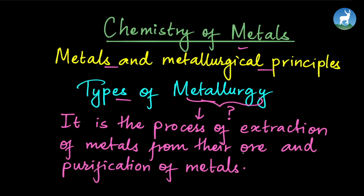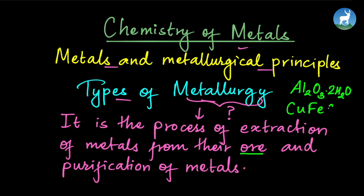We will talk about metals in a mixed state or combined state. We will talk about minerals — for example, Al2O3·2H2O, which gives us aluminum. Then we will talk about copper pyrites, CuFeS2, which gives us copper.